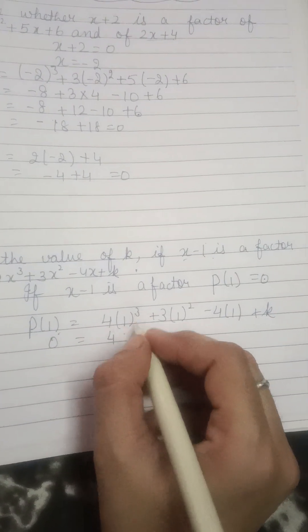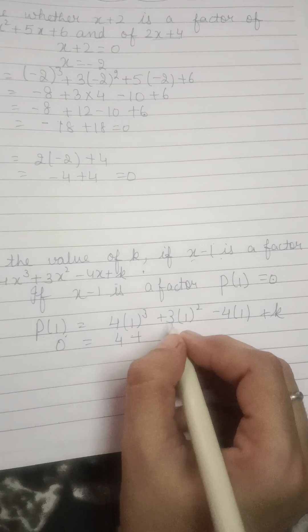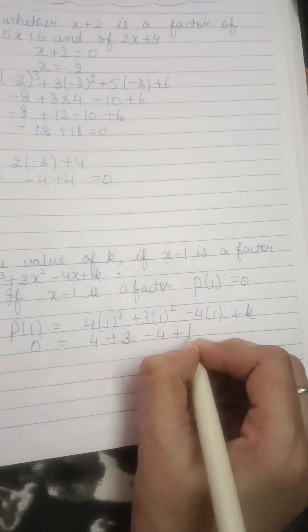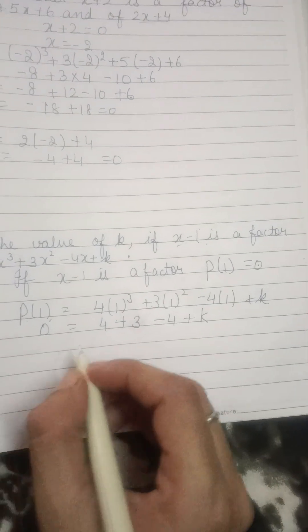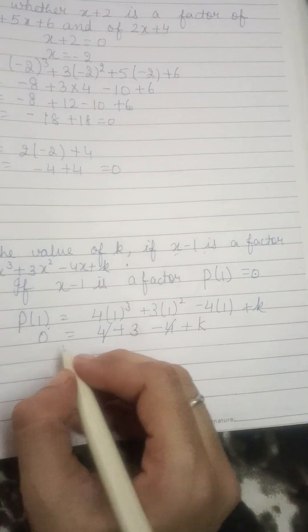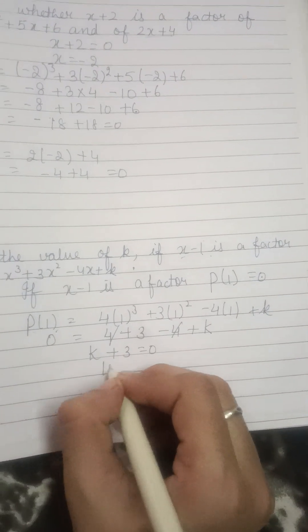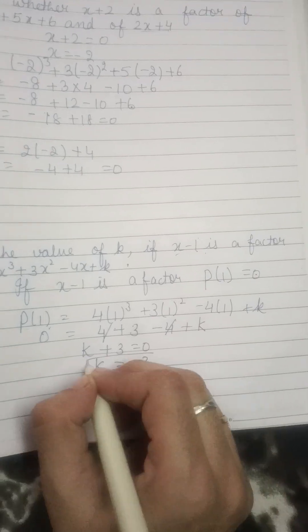0 put करो, 4, 1 cube is 1, 1 square is 1, minus 4 plus k. अब find out करो, plus minus, cancel out. k plus 3 equals 0, k की value होगी, हमारे पास minus of 3.